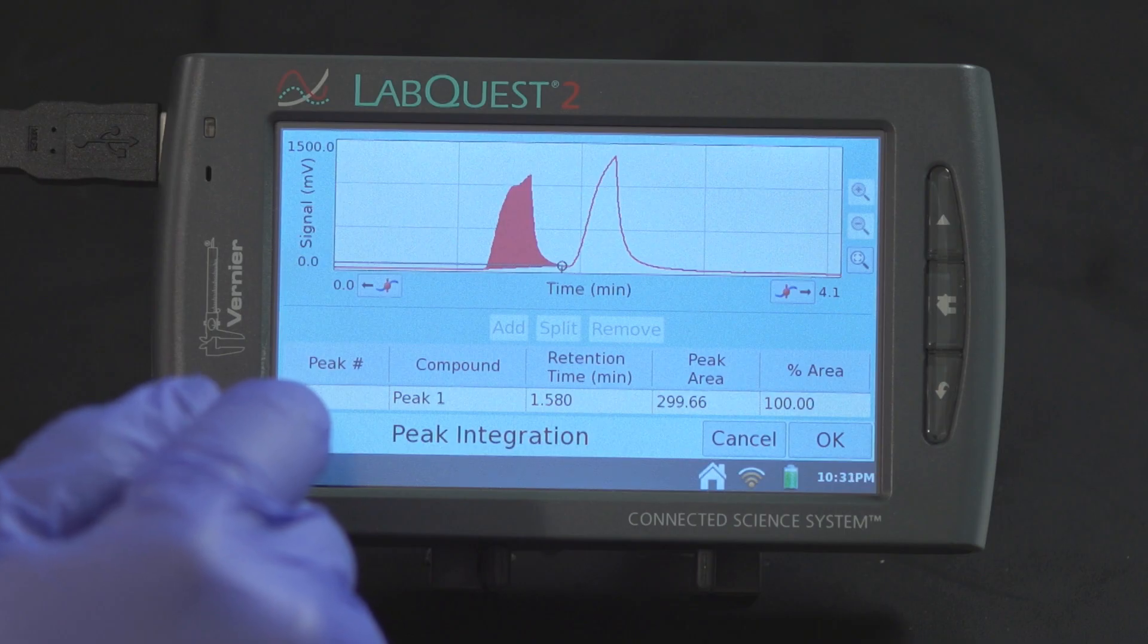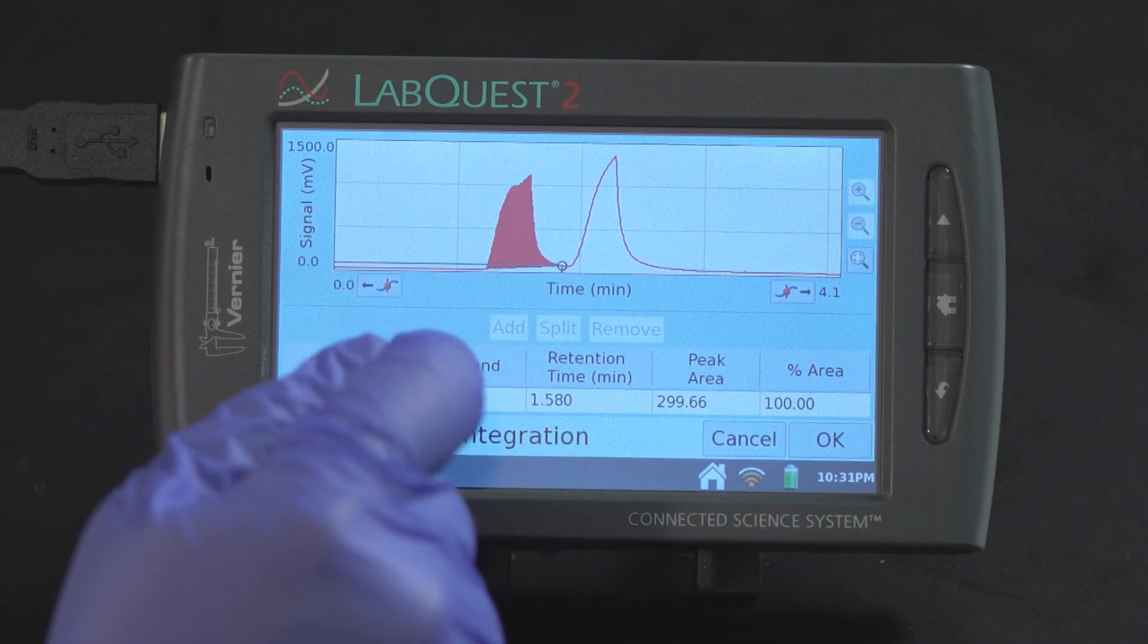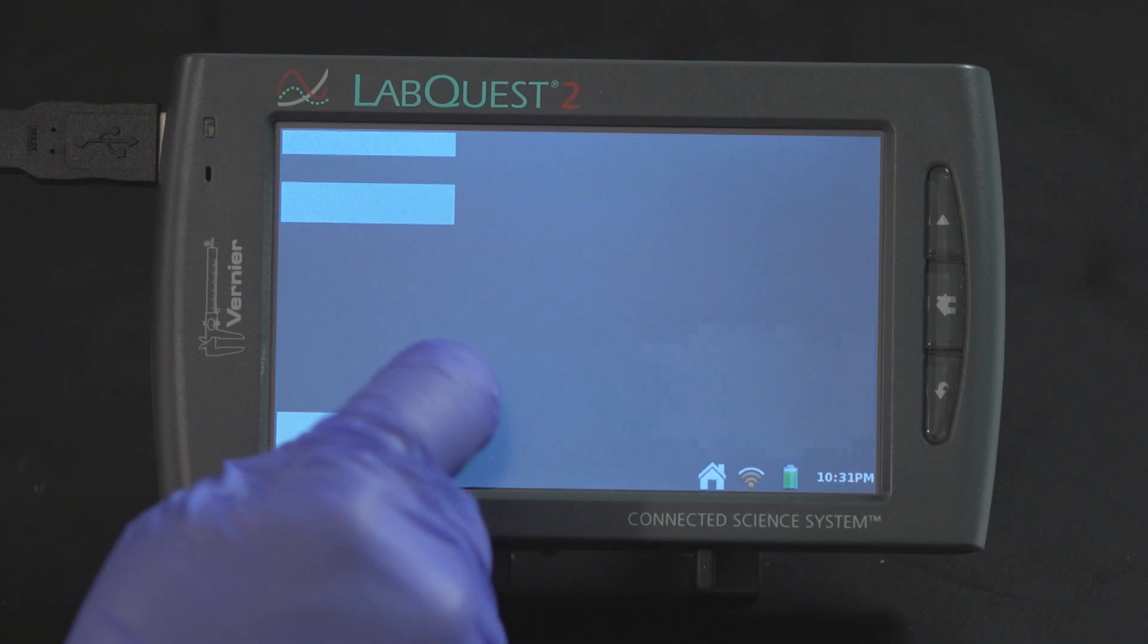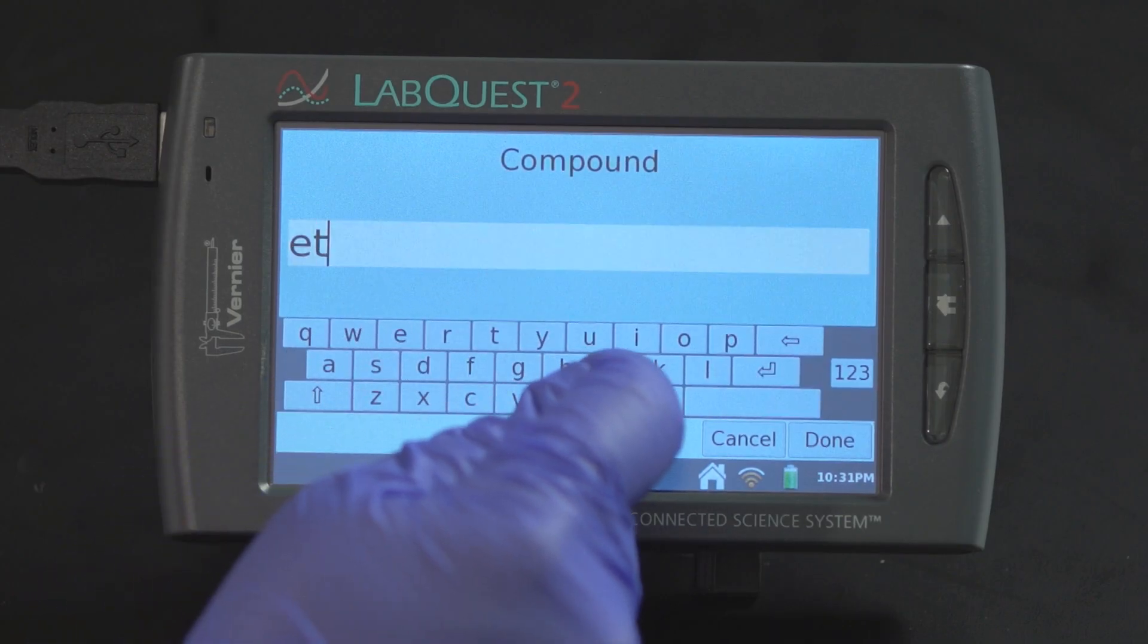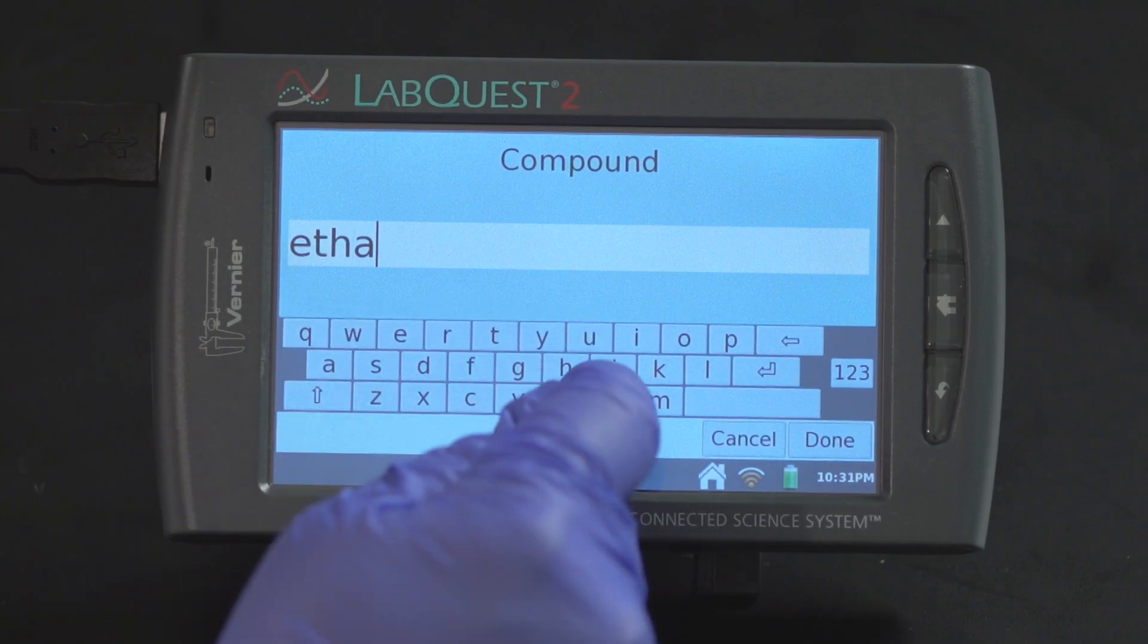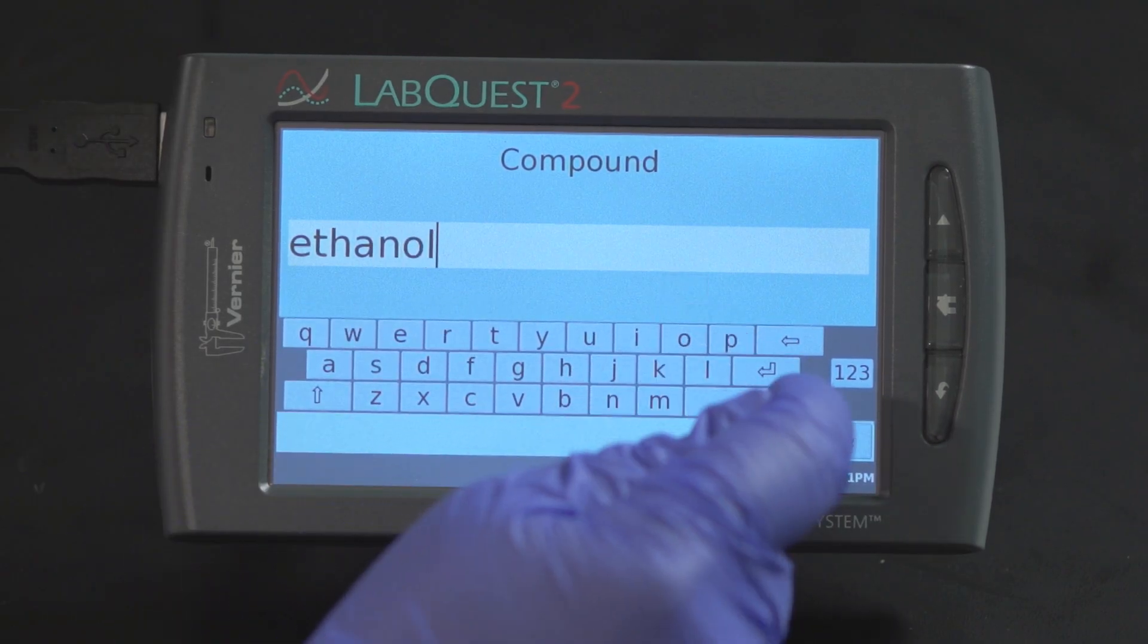Enter the name of the compound if known. Tap twice on peak one and type in ethanol. Choose done.